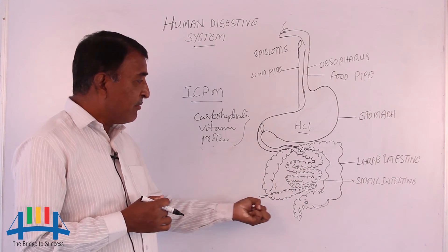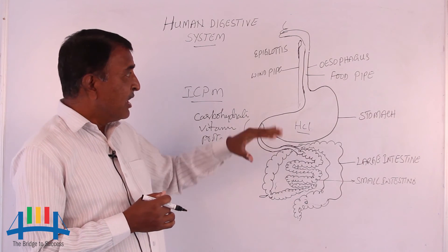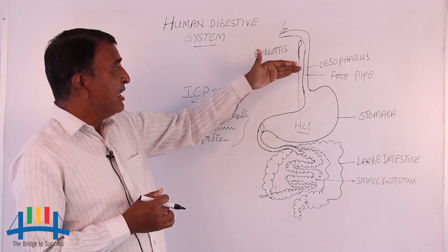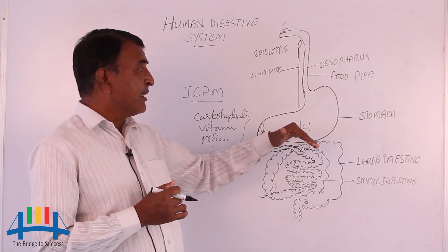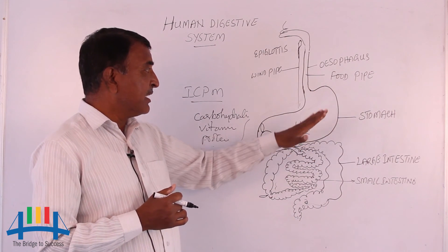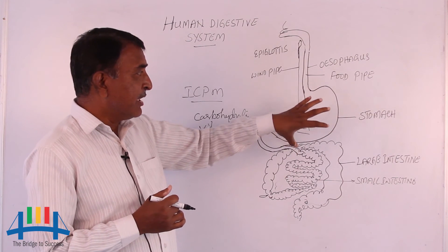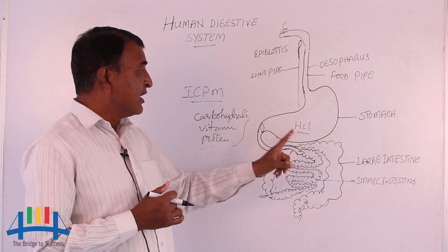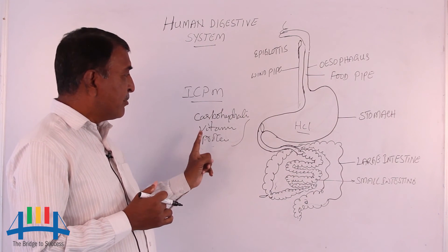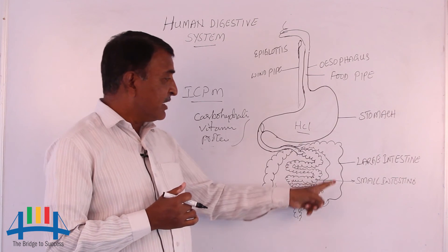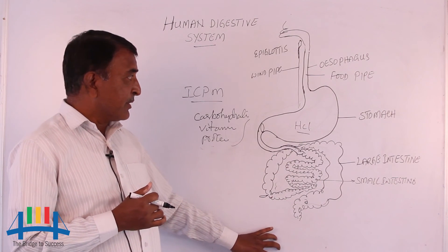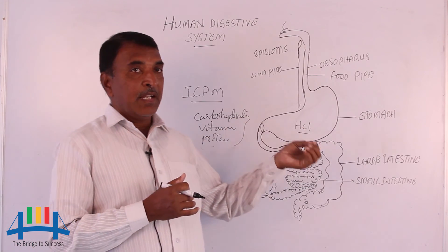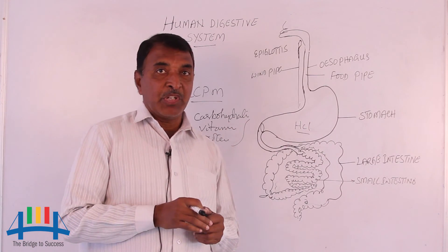These are the processes where the food we are taking is absorbed by different parts. The main important thing is: the stomach is not important for absorption — it only makes the food very soft. The small intestine absorbs carbohydrates, proteins, vitamins, and lipids. The large intestine absorbs only water. This is one of the important factors of food digestion in our body system.